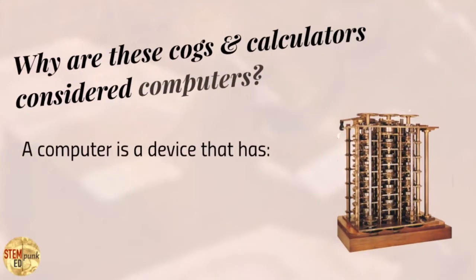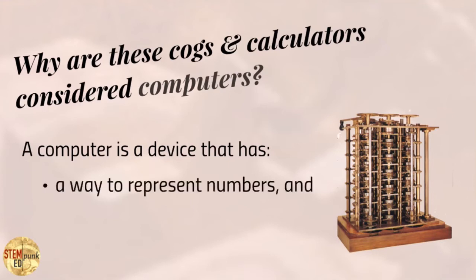So again, why is this next era of calculation machines, cogs and calculators, considered computers? Again, they have a way to represent numbers and a system for manipulating them. The numbers are represented by teeth in gears and a way of manipulating them: carrying levers, carrying sensors, multiple place values, rotating drums. Those are ways of manipulating them, using them to do calculations.